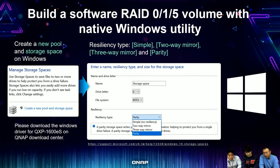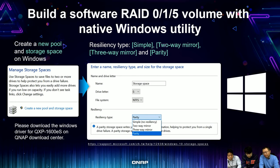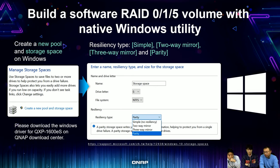For Windows, starting from Windows 8 and Windows Server, there's a utility called Storage Spaces to easily create software RAID with the J-Bot. Windows supports RAID 0, RAID 1, and RAID 5. For RAID 1 you can choose a two-way or three-way mirror. Note: if you install the QXP-1600ES card on Windows you have to install a driver from our download center. The four-port and eight-port QXP cards don't need an additional driver — only the 16-port requires one.